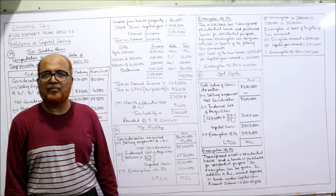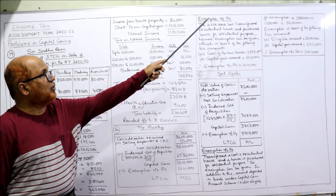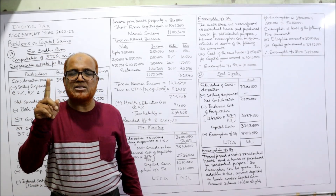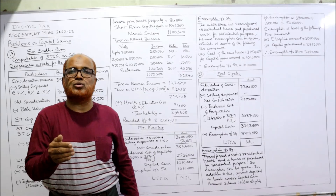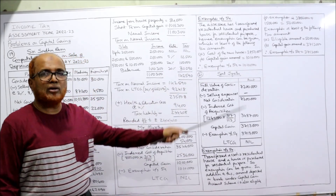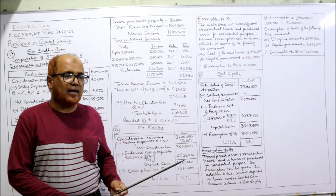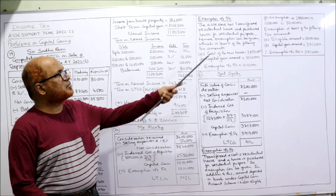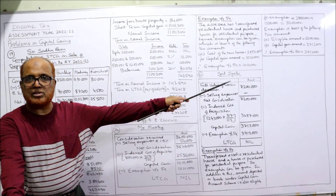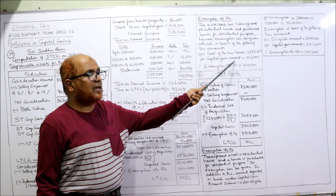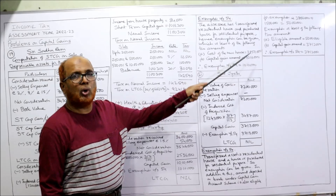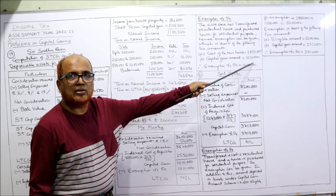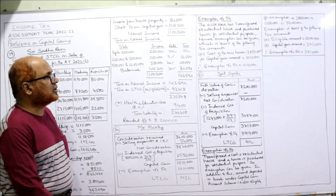The exemption under Section 54 applies because the assessee transferred a residential house and purchased a house for residential purpose within the stipulated period. Always write working notes in examinations. The exemption is the least of: (1) cost of the new house = ₹38,50,000, or (2) capital gain amount = ₹10,10,000. The lower amount is ₹10,10,000, so exemption under Section 54 is ₹10,10,000 and long-term capital gain is nil.